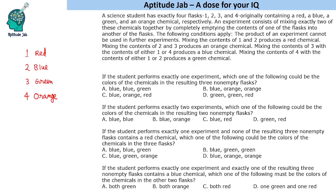Mixing the contents of flasks 1 and 2 produces a red chemical. Mixing the contents of flasks 2 and 3 produces an orange chemical. And mixing the contents of flask 3 with either flask 1 or flask 4 produces a blue chemical.